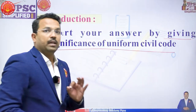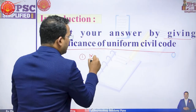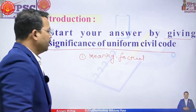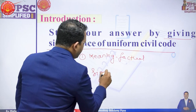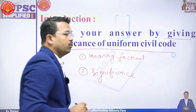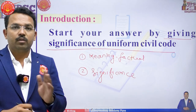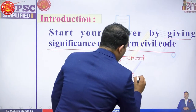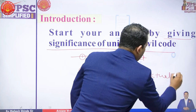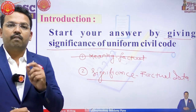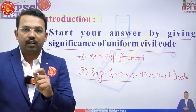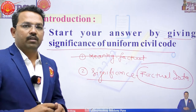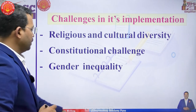So what should your introduction look like? The first paragraph of your answer should start by giving the significance of the Uniform Civil Code — not its meaning. UPSC expects you to know the meaning, so they want you to write its significance along with factual data such as the article number, the part, and any relevant amendments. Factual data gives substantiation to your answer.